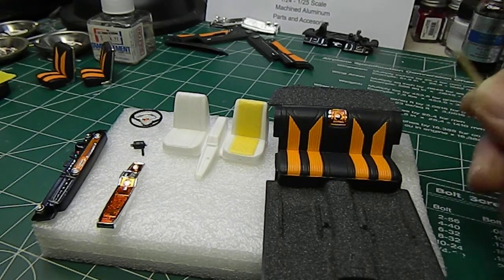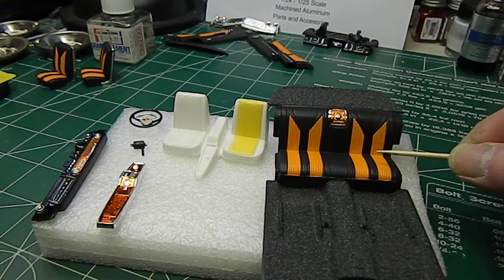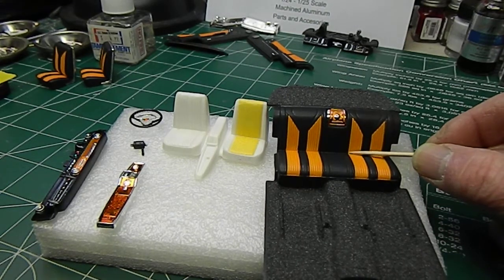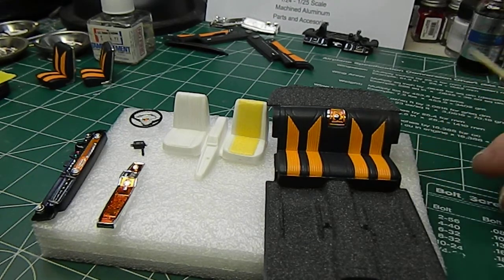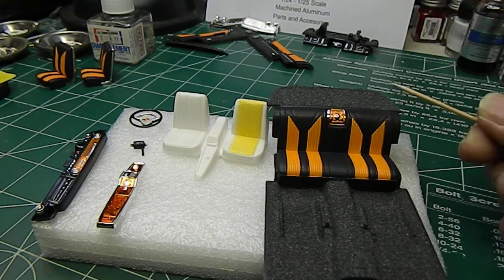This video is going to show how I get a crisp corner without any bleed-through at the crease. This is my interior for my Foose Impala.